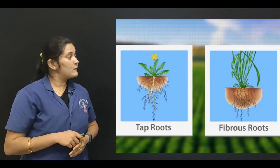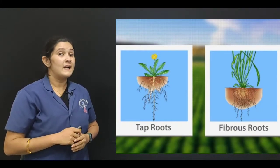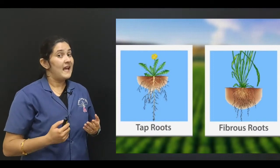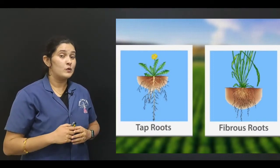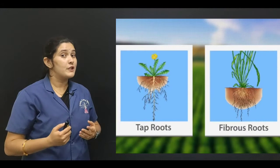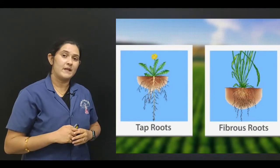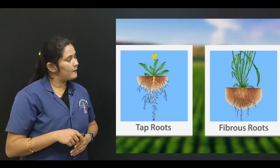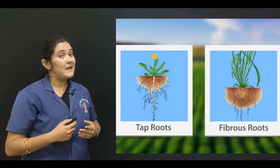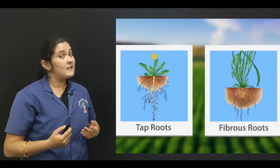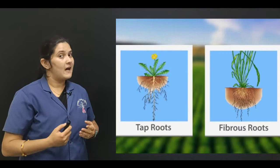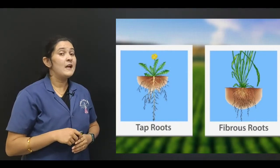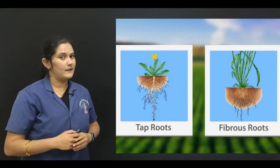Fibrous roots are the roots that do not have one main root. They have many smaller or bushy roots that arise from the end of the stem. Here you can observe fibrous roots — many thin small roots arise from the end of the stem and go into the soil.